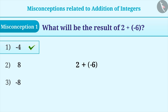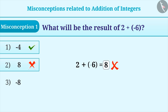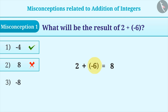Sometimes, the signs are ignored during addition and an incorrect answer is chosen, that is option 2, which is 8. Similarly, sometimes the numeral values of numbers, that is, values without signs, are added and the sign of the integer with the greater numeral value is placed. This leads to an incorrect answer, that is option 3, which is minus 8.